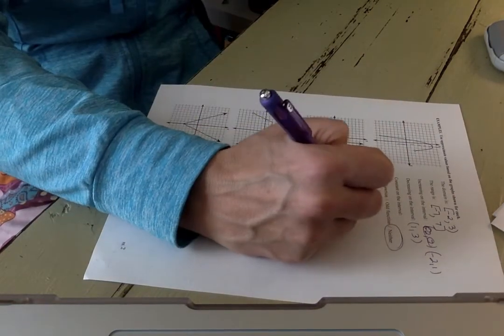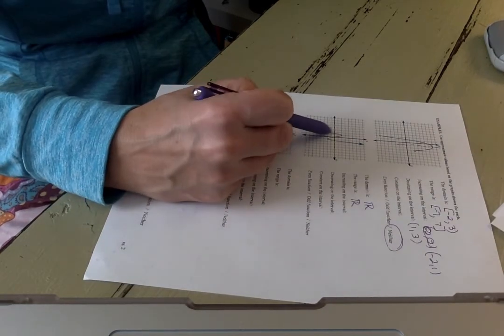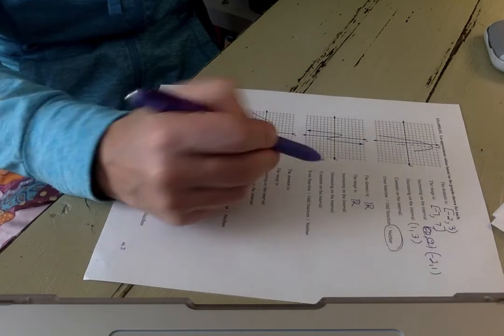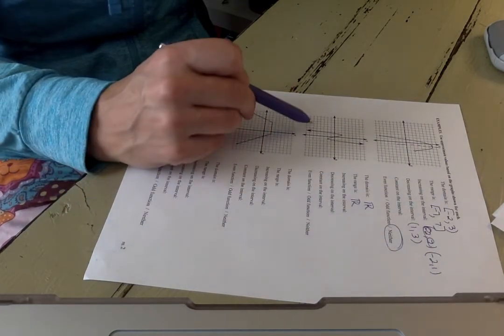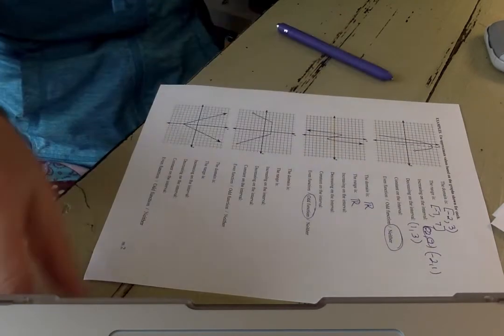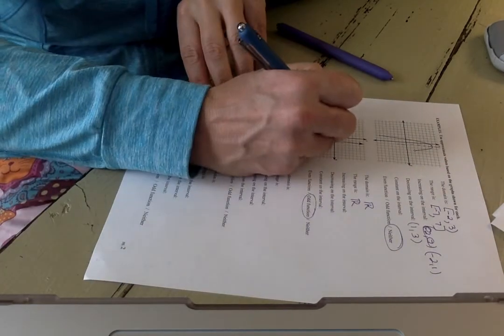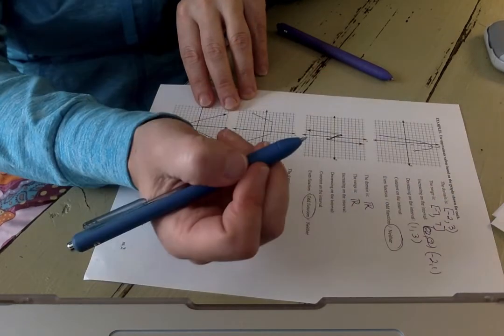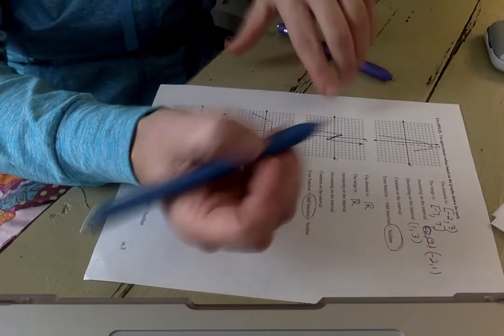The domain for this function looks like all real numbers, as does the range, and it's increasing on the interval from here to here and then from there, and it's decreasing there. There are no constants. Now, if I look at this function, I can tell you right now that this is an odd function because if you were to take this point here and that point there, they are the same distance away from the origin.